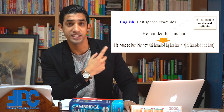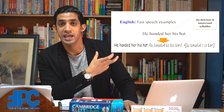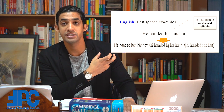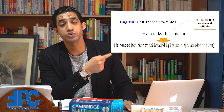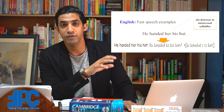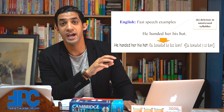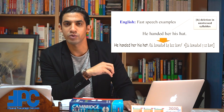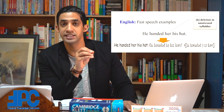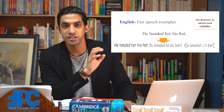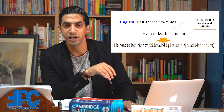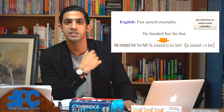Another example of deletion in English: the /h/ sound is deleted whenever it is found in an unstressed syllable. Take the sentence 'He handed her his hat.' In fast speech, the /h/ in 'her' and 'his' is deleted because the vowels in those syllables are unstressed. So instead of 'He handed her his hat,' we actually say 'He handed-er-is hat.' This is another example of deletion in English.